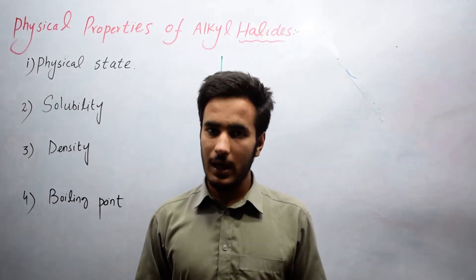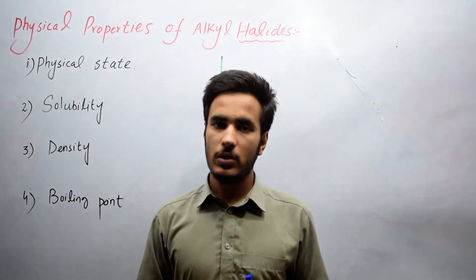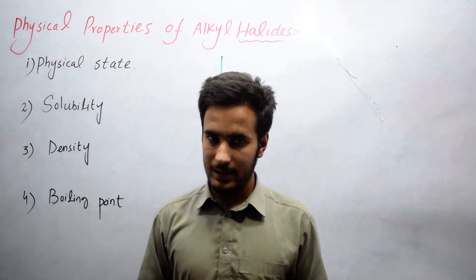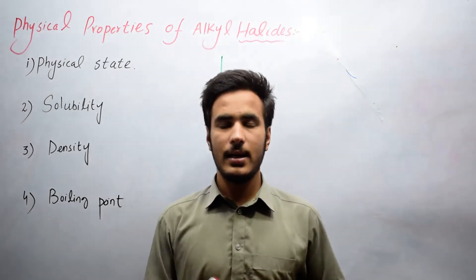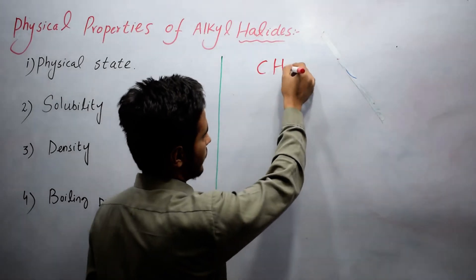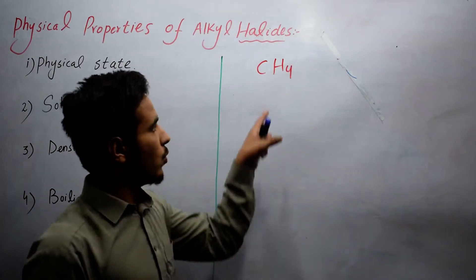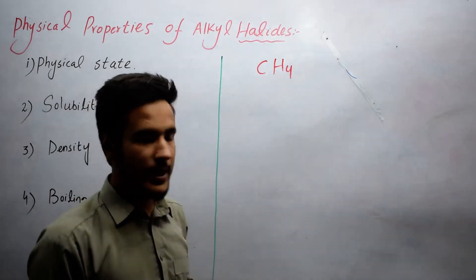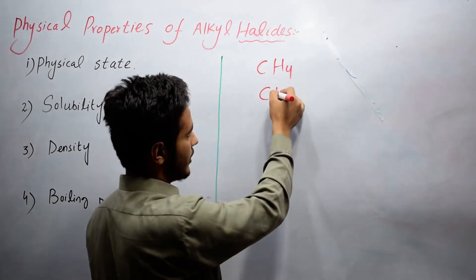Alkyl halides or haloalkanes are derivatives of alkane. Consider the example of methane, CH4. If you remove one hydrogen from methane, it will become CH3.